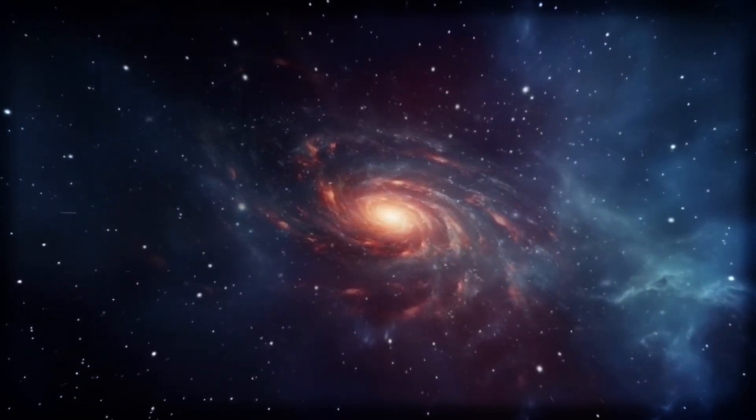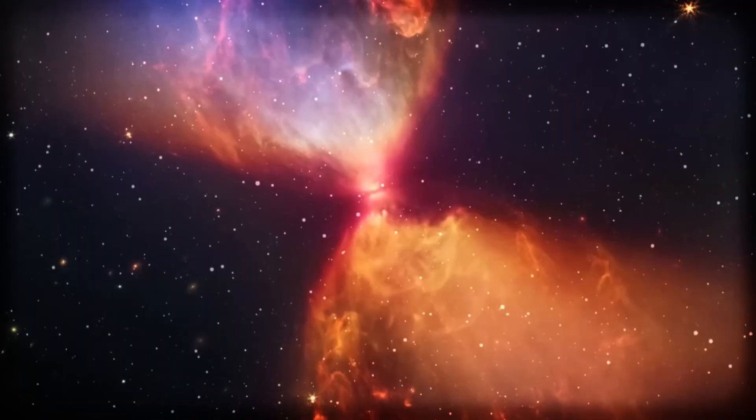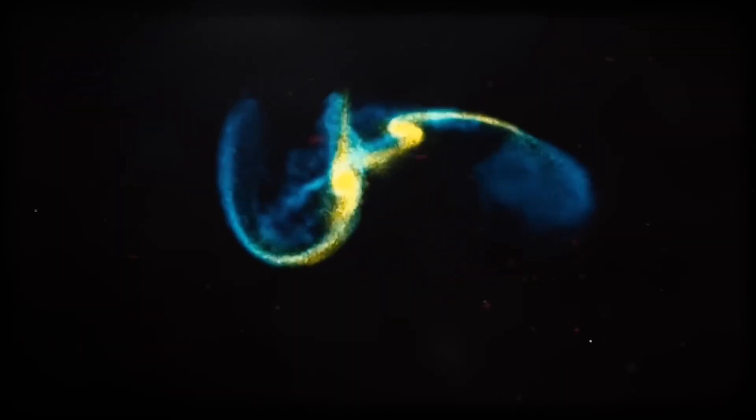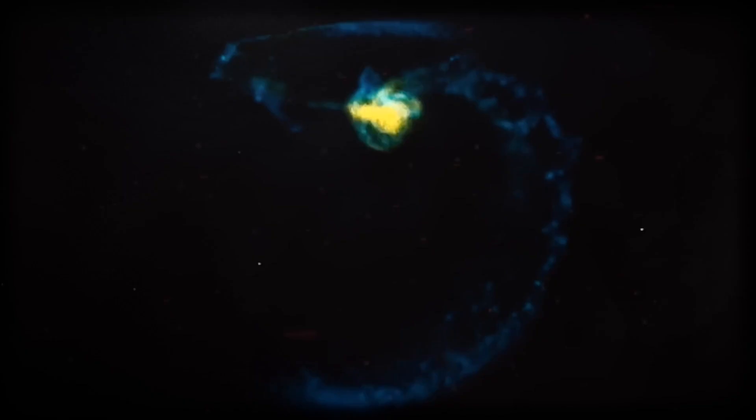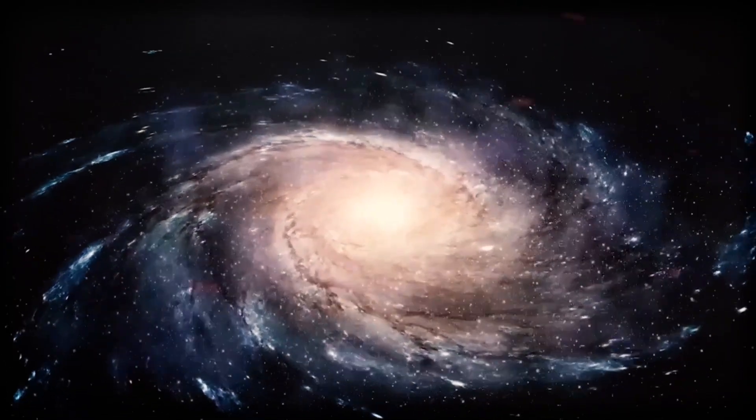If a galaxy is glowing like that, it usually means it's massive, full of stars. But here's the thing, there simply shouldn't have been enough time for them to grow that large. It left scientists wondering, how did these galaxies get so big so fast? And why are they so bright when they technically shouldn't even exist yet?